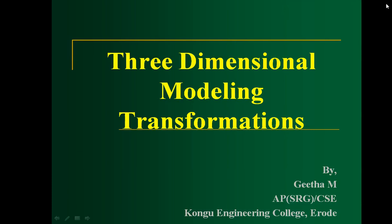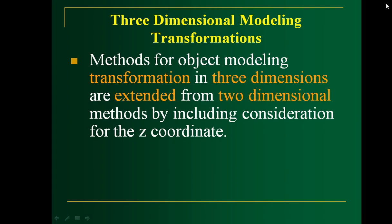Hello students. Today you are going to learn how to apply different transformations to any three-dimensional object. Previously you might have learnt how to apply different transformations for a 2D object, so it is similar to 2D. The new thing is that for any 3D object, you have three axes: X, Y and Z. The Z axis represents the depth information for any object.